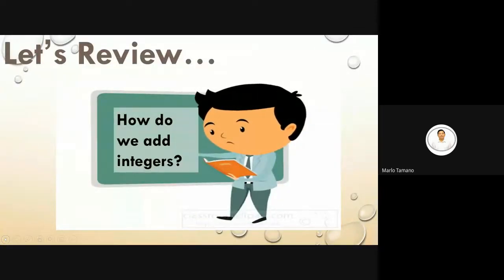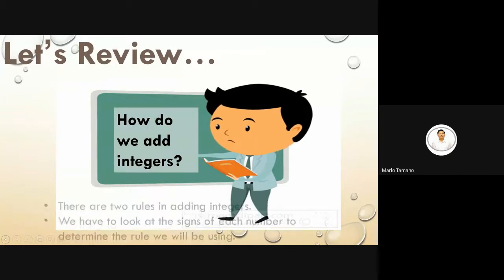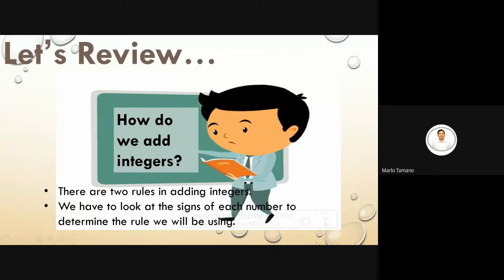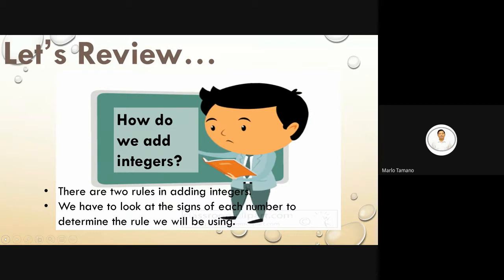How do we add integers? Let us review. There are two rules in adding integers. We have to look at the sign of each number to determine the rule we will be using.